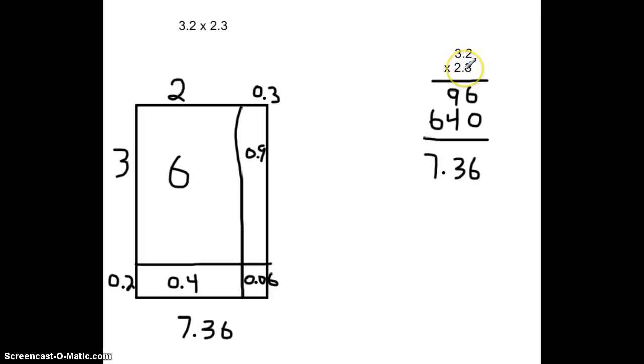And dividing by 10 twice is the same as dividing by 100. So, we need to move our decimal over two places. And we get 7.36.